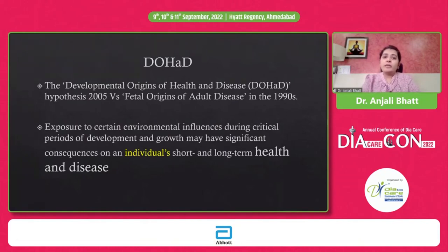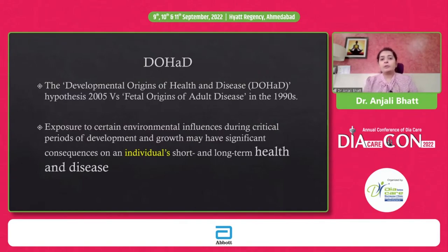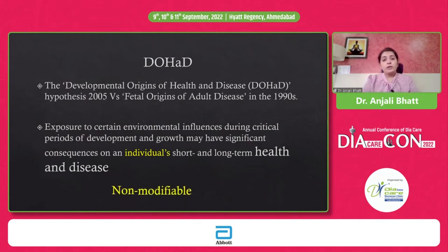It was then changed to Developmental Origins of Health and Disorders. So it is not only those nine months in the mother's womb, but also certain important stages throughout the individual's life that can get modified by environmental exposures. Throughout life, the developmental origins of health and disorders can be affected — modified favorably as well as unfavorably. It is not only the individual, but generations to come can change because of such exposures. Earlier this was thought to be non-modifiable, but now many of these factors are coming into the list of modifiable factors.